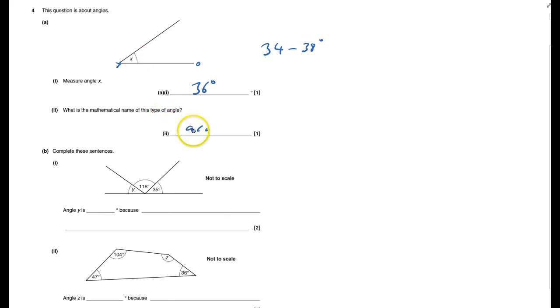Complete the sentences. Well, we need to work out what that one is. Angle y is - I need to add these numbers up which gives 153. Don't forget you got a calculator. And therefore it must be 27 degrees because angles on a straight line add up to 180 degrees.